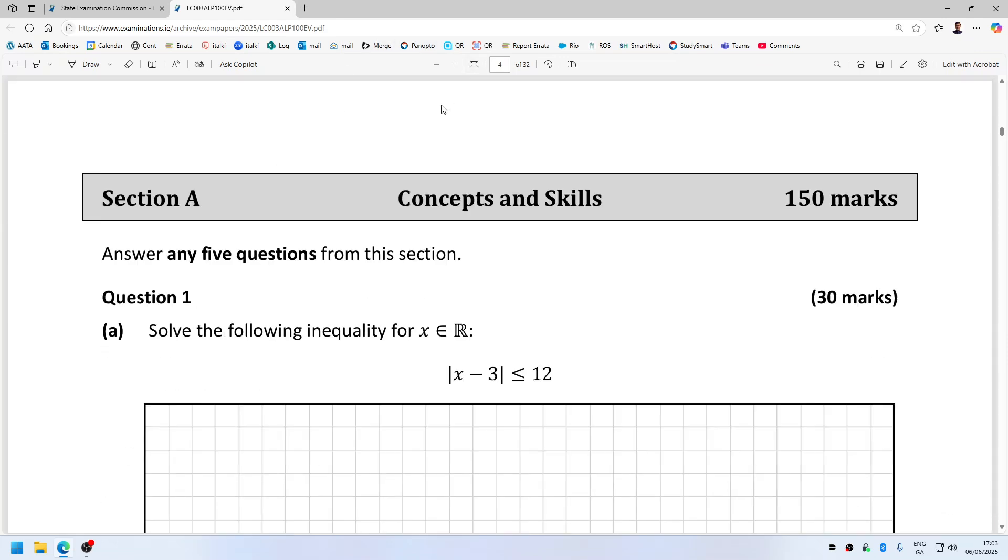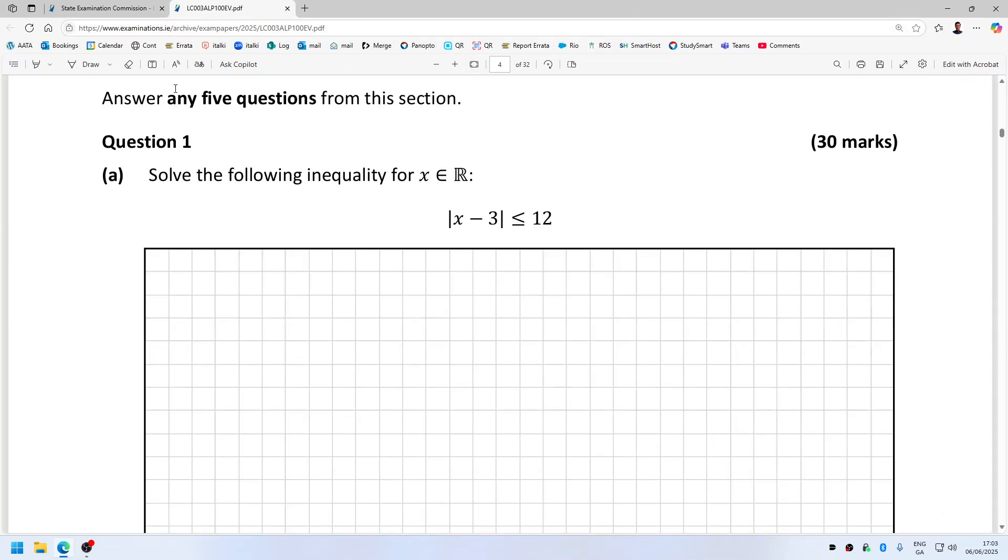Solve the following inequality. Easy peasy. Square both sides. x squared minus 6x plus 9 less than or equal to 12. x squared minus 6x, 9 minus 12 is minus 3. Oh, sorry, 12 squared of course, which is 144.